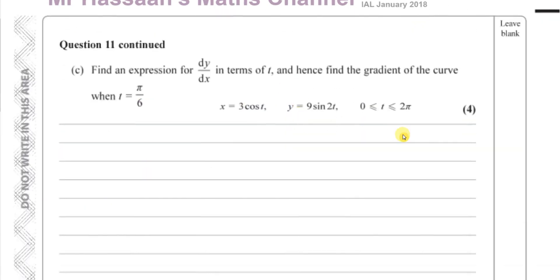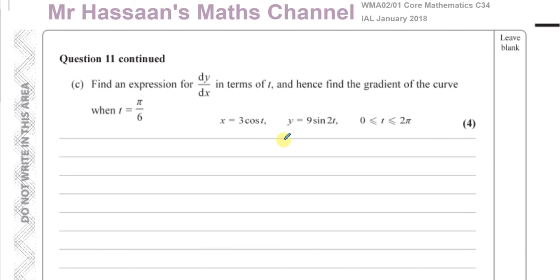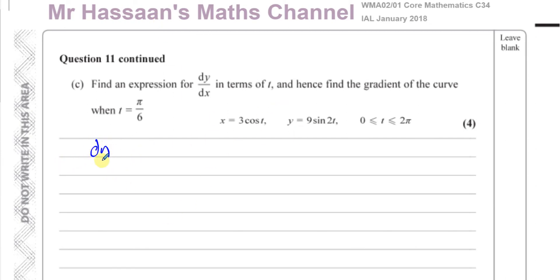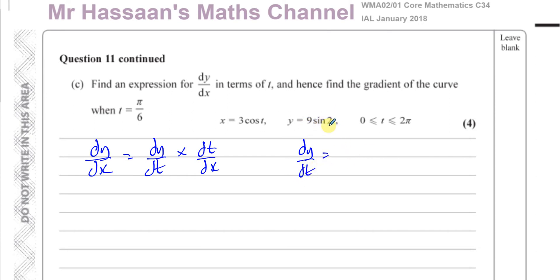Part (c) asks us to find an expression for dy/dx in terms of t, and hence find the gradient when t equals pi over 6. We use the chain rule: dy/dx equals dy/dt multiplied by dt/dx. Differentiating y equals 9 sine 2t with respect to t gives 9 cosine 2t times 2, which is 18 cosine 2t. That's dy/dt.